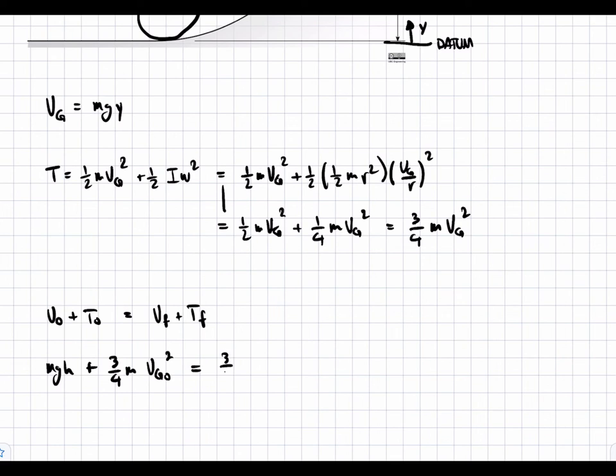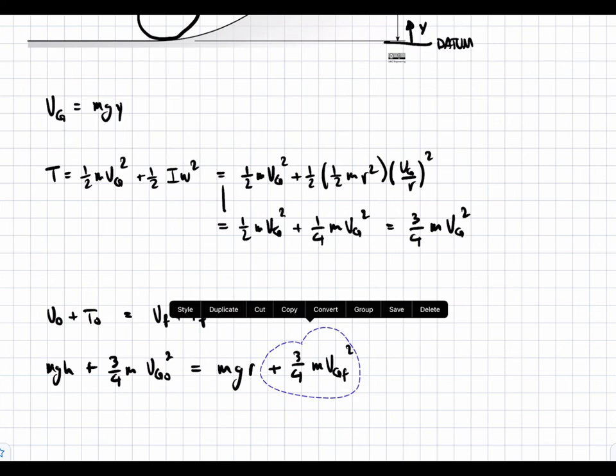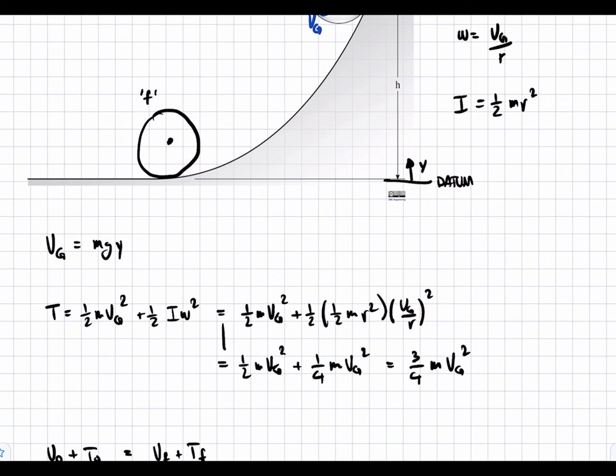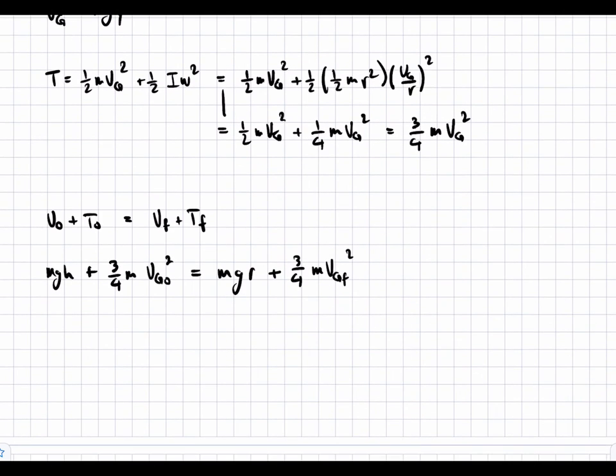This is going to be equal to the final velocity, which is what we're trying to find. Three-fourths m vgf squared, plus the potential energy, sorry, this is the kinetic energy, which goes here. Potential energy is mgr. And this is because, at the final state, our center of gravity will be at a height, r, with respect to our datum. That's why we have mgr.